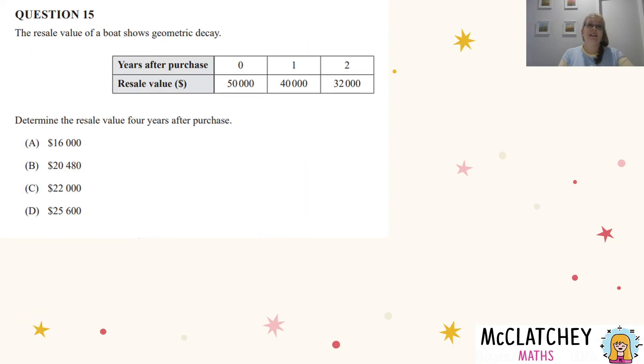And question 15, the resale value of a boat shows geometric decay. So that word geometric points us straight away to a geometric sequence. We can pluck that off our formula sheet. At year zero, it was worth $50,000. After one year, it was worth $40,000. After the second year, $32,000.